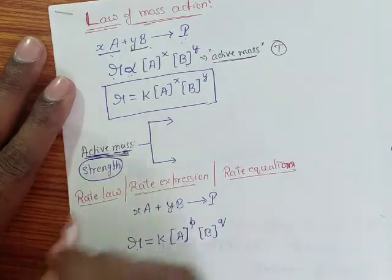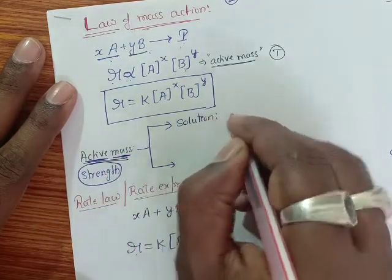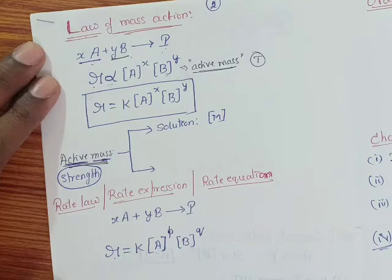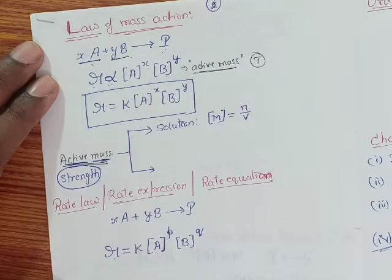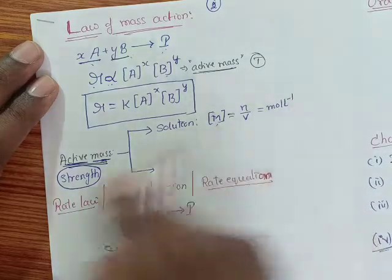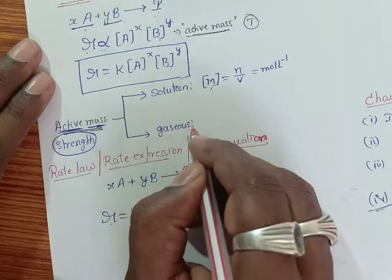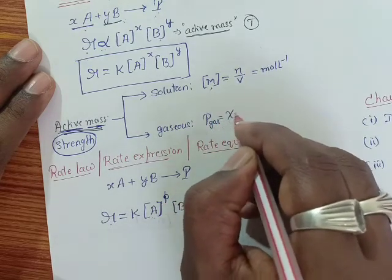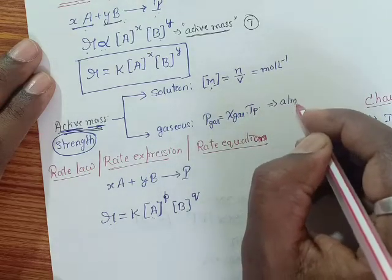This strength can be expressed in two ways. If the reaction is carried out in solution state, then the strength is expressed in terms of molarity. Molarity is the number of moles of solute present in one liter of solution. The unit is mol per liter. Greater the molarity, greater the reactivity. If the reaction is carried out in gaseous state, then we express the strength of the reactant in terms of pressure. The pressure of the reactant molecule is always equal to the mole fraction of that gas into total pressure. The unit is represented in terms of atmosphere.